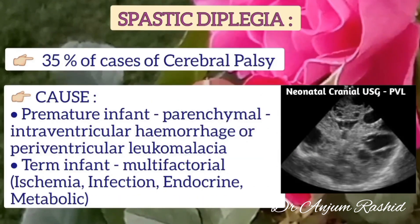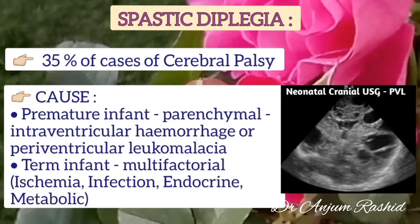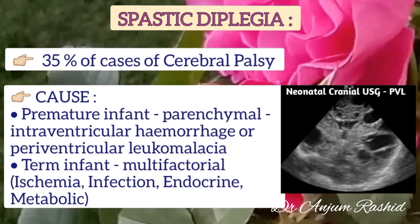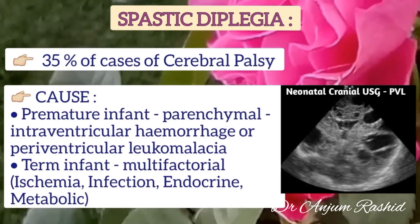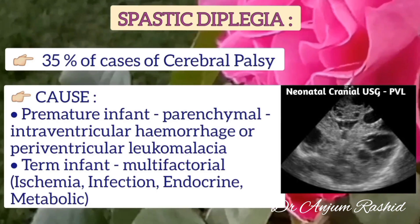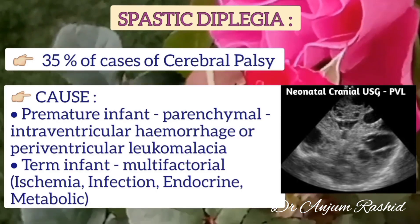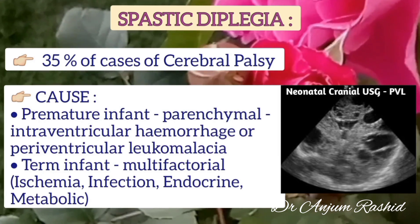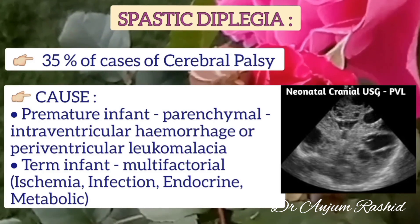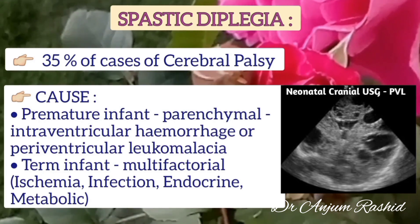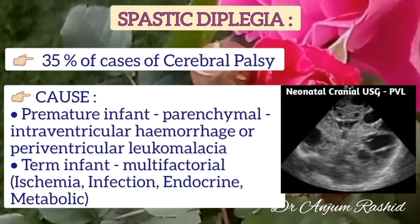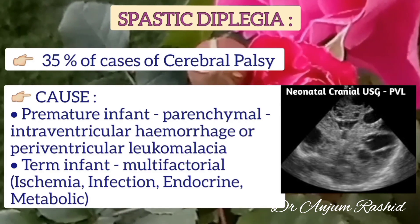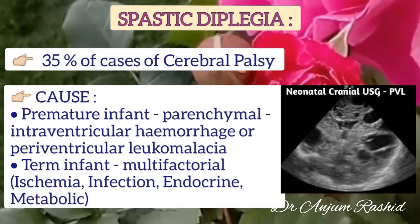Spastic diplegia accounts for 35% of cerebral palsy cases. In premature infants, it is due to parenchymal intraventricular hemorrhage or periventricular leukomalacia. In term infants, causes may be multifactorial including ischemia, infection, endocrine, or metabolic causes.